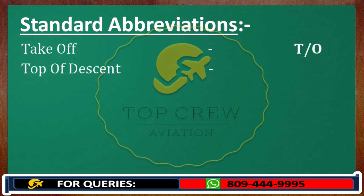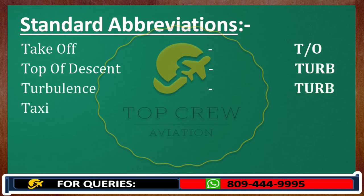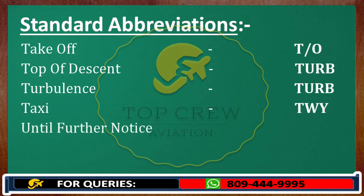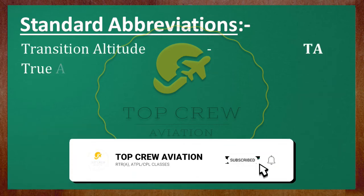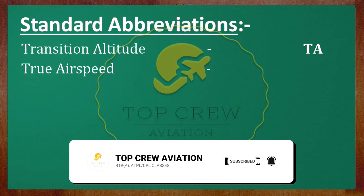Top of descent: TOD. Turbulence: TURB. Taxiway: TWY. Until further notice: UFN. Transition altitude: TA. True airspeed: TAS.